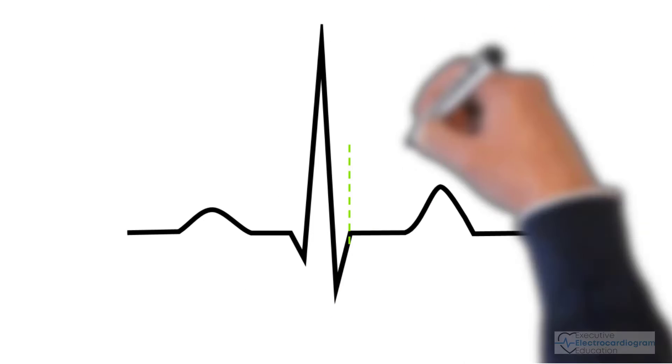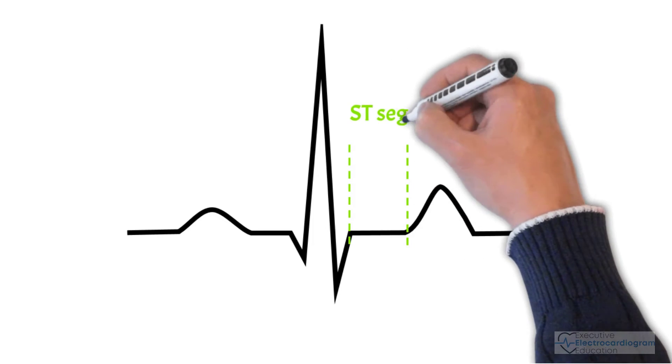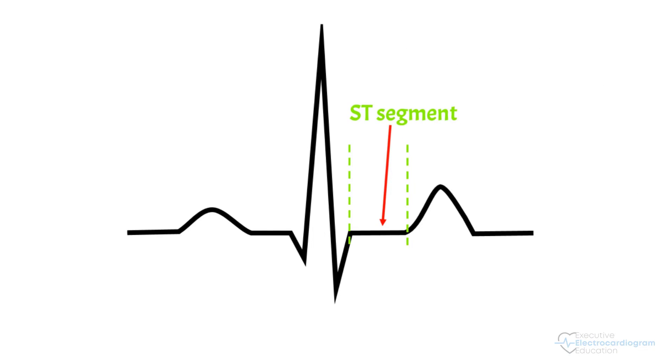This section from the end of the QRS complex to the beginning of the T wave is the ST segment. The point where the end of the QRS complex meets the beginning of the ST wave is called the J point. This is important when looking for injury to the heart muscle. It may be elevated or depressed.